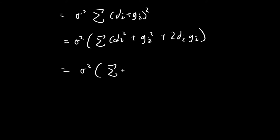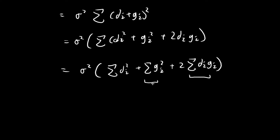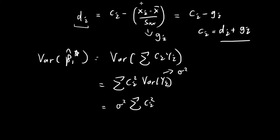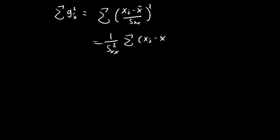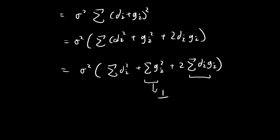The variance is sigma squared times the sum of di squared, plus the sum of gi squared, plus 2 times the sum of di times gi. Let's evaluate the sum of gi squared. Since gi equals (xi minus the sample mean of x) divided by s_xx, we get gi squared equals (xi minus the sample mean of x) squared divided by s_xx squared. Summing over i, the numerator becomes s_xx, so the sum of gi squared equals 1 over s_xx.